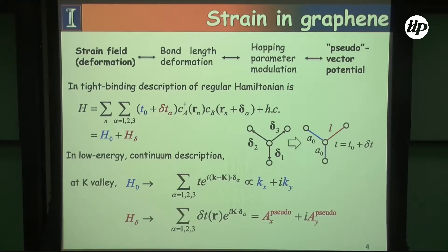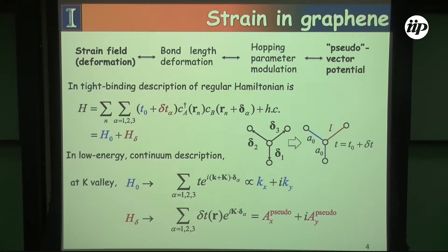Because strain does not couple the two valleys, we can project everything down onto one particular valley — taking the K valley and projecting onto it. We then have our normal low-energy effective Hamiltonian plus the strain field, which adds different pseudo-gauge field components. The imaginary term comes from the fact that we've explicitly broken inversion symmetry.